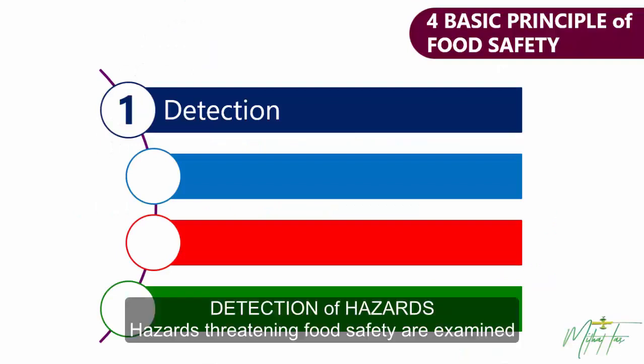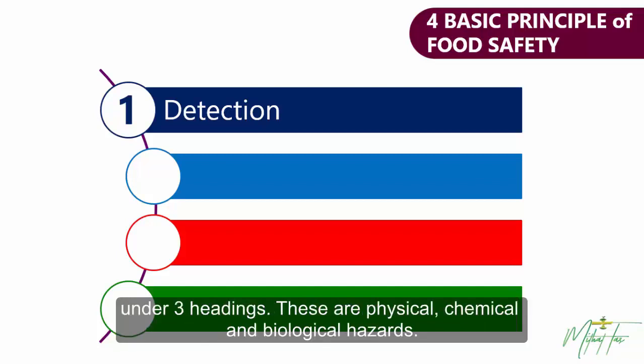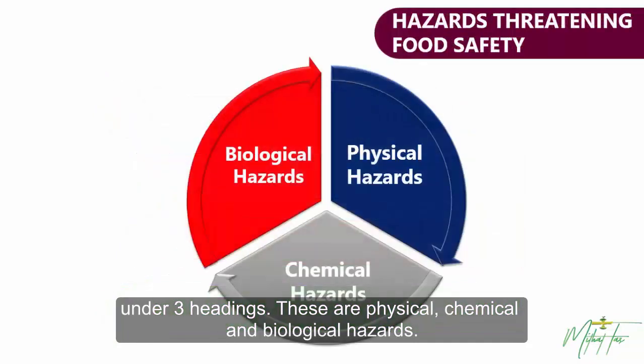Detection of hazards. Hazards threatening food safety are examined under three headings: physical, chemical, and biological hazards.